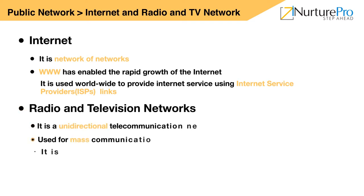Radio and Television Networks are unidirectional and are used for mass communication. These networks are usually accessed using cable TV. A data connection established using a cable TV network is shared between several users without requiring a separate connection to every home, as in the case of ISDN. It is mostly found in urban areas and is very economical.